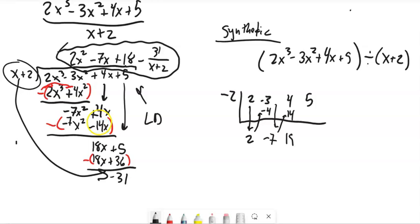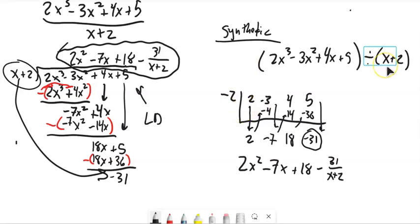That is 18 here again. Then you do it again. This times negative 2 is negative 36. Add, negative 31. Notice what you get is you get this is your remainder and you get these values. We had x cubed divided by an x. So this first term is an x squared. So I have 2x squared minus 7x plus 18 minus, this is my remainder, 31 over x plus 2. So synthetic division is long division, really streamlined, for when this thing you're dividing by is linear.